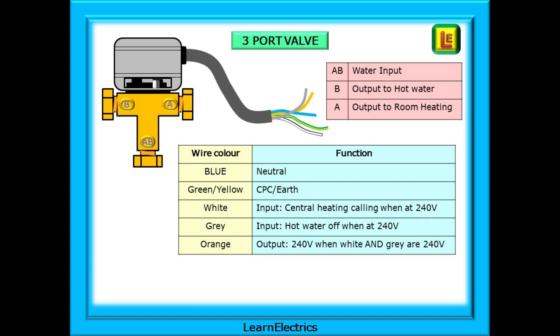The valve will normally come with a five wire lead attached to it. Blue is neutral, green and yellow is the earth or CPC wire. The white input wire will be at 240 volts when the central heating is calling for heat. It is important to understand the grey wire's function. When the grey wire is at 240 volts, this is telling the valve that hot water heating is not required. And more on this soon.